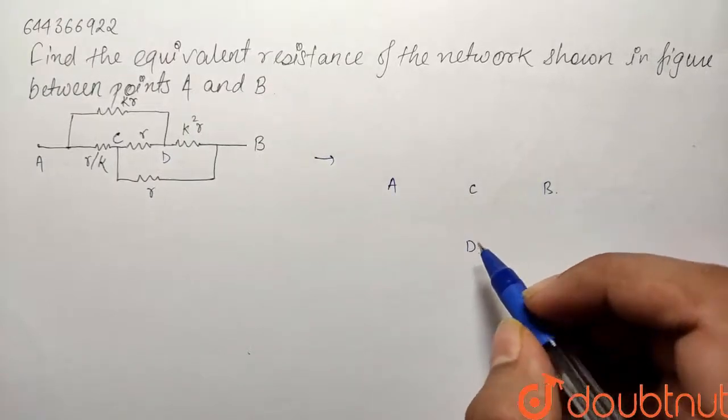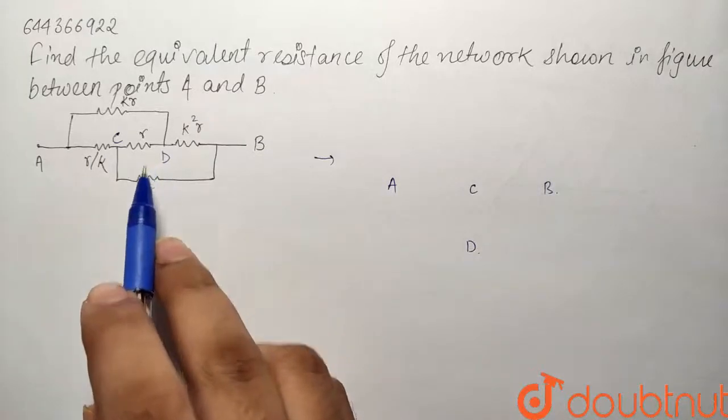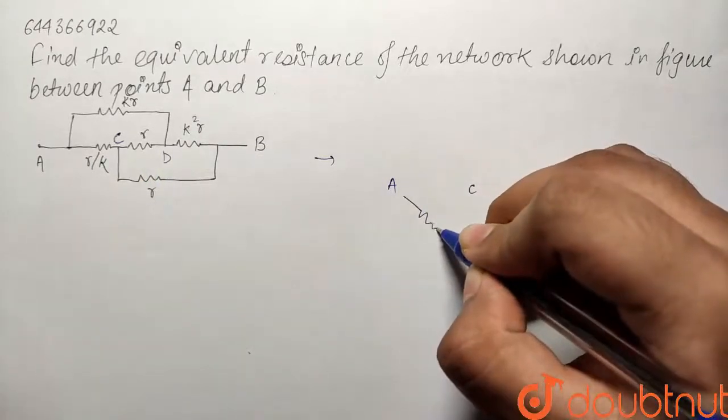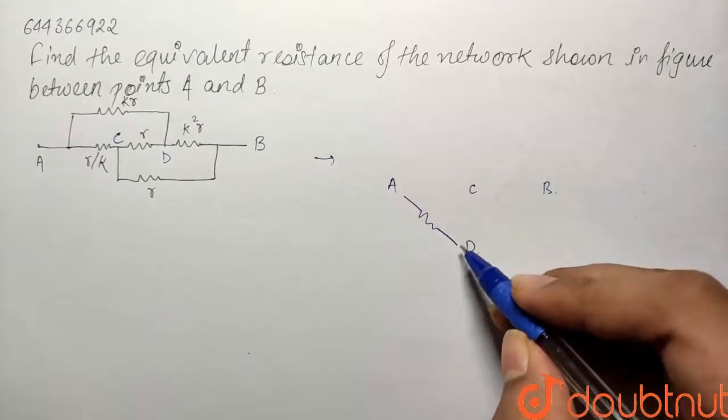So what we have, our first resistor is between A and D and its value is KR. So I'll connect a resistor between A and D and it will be equal to KR.